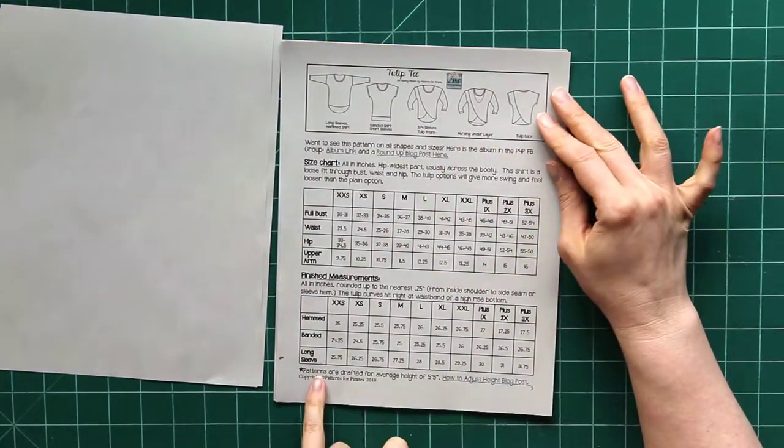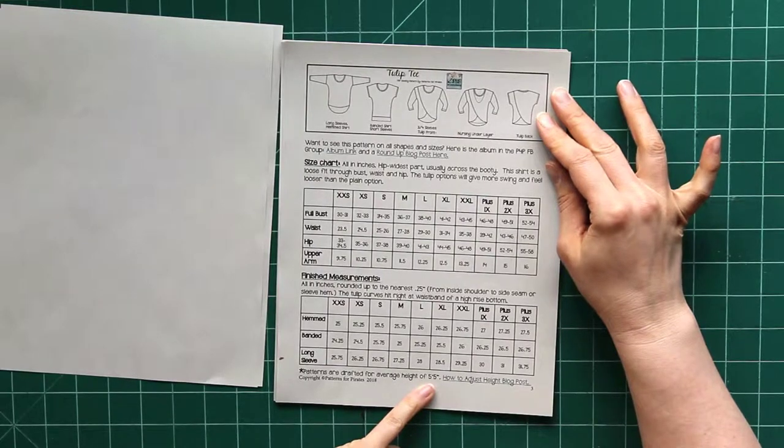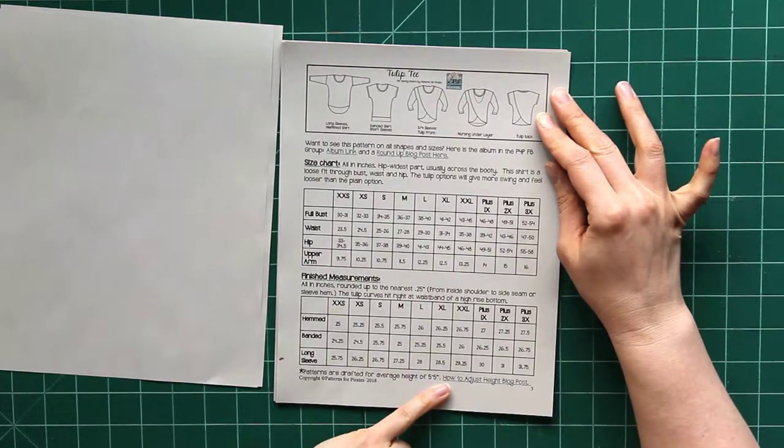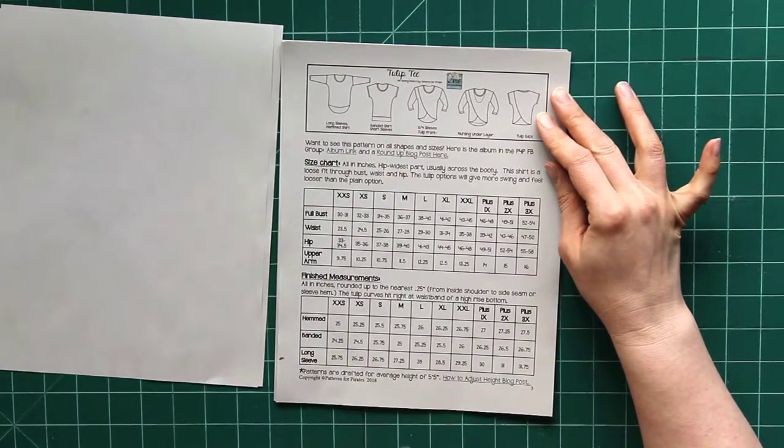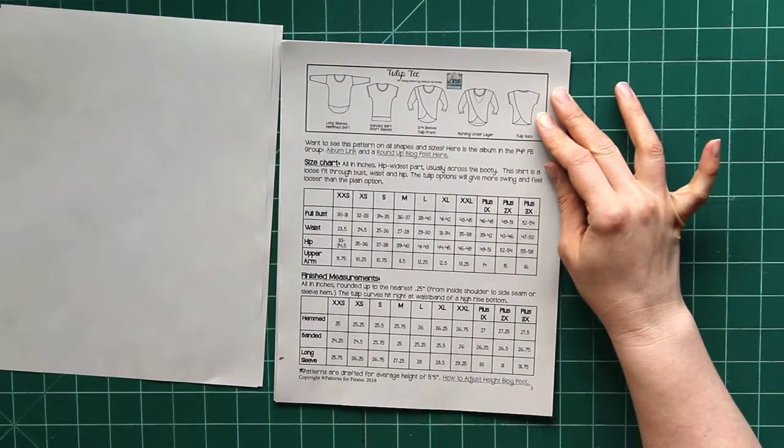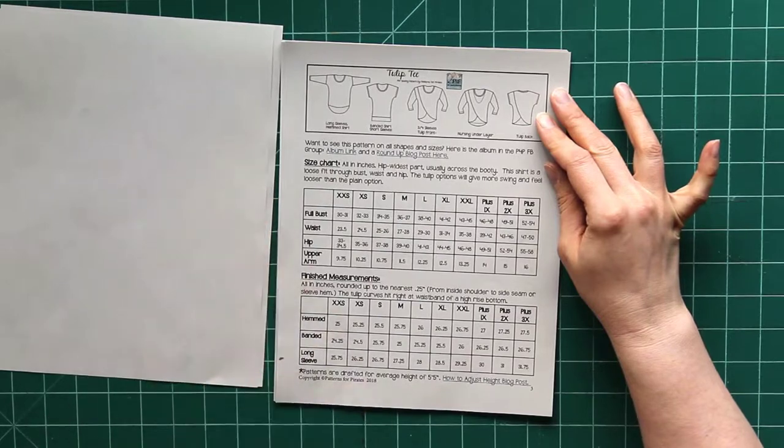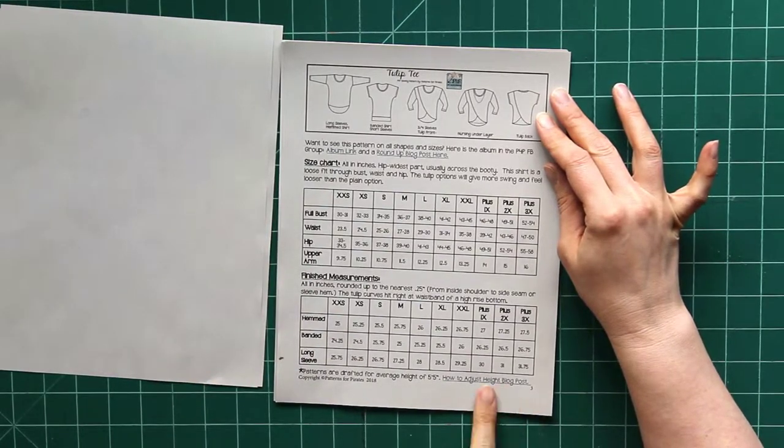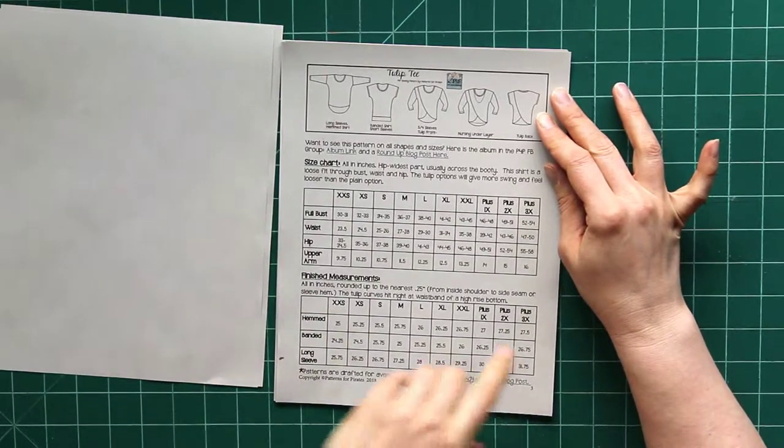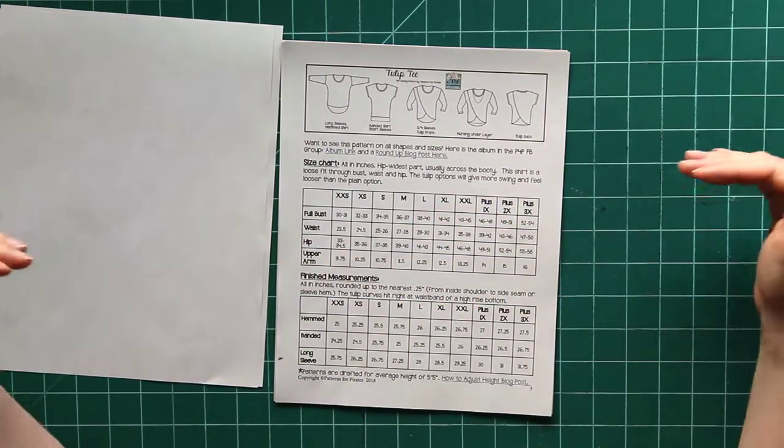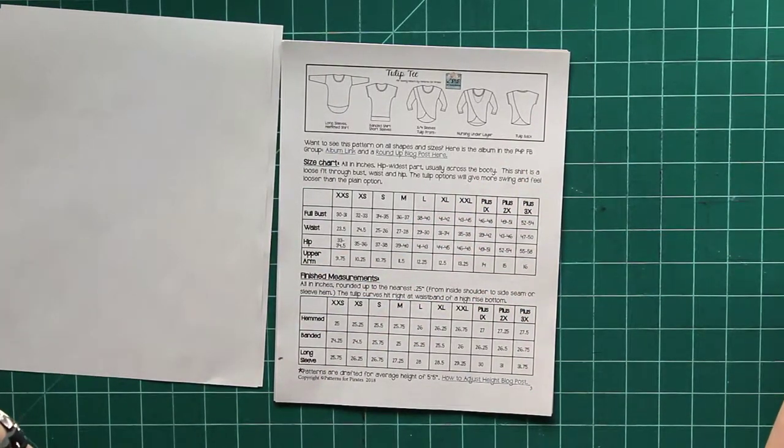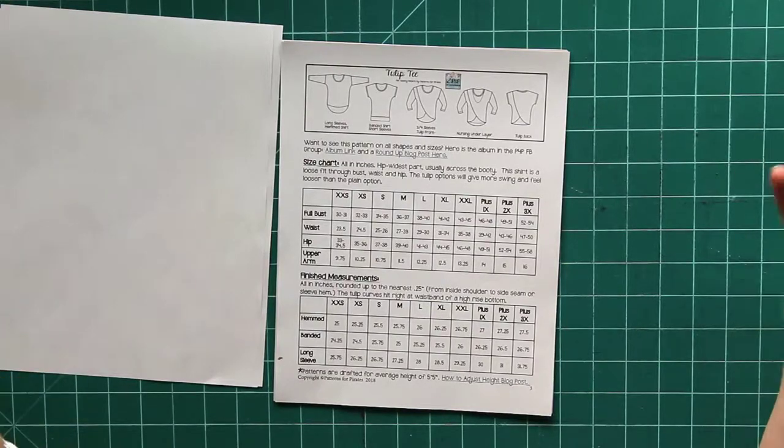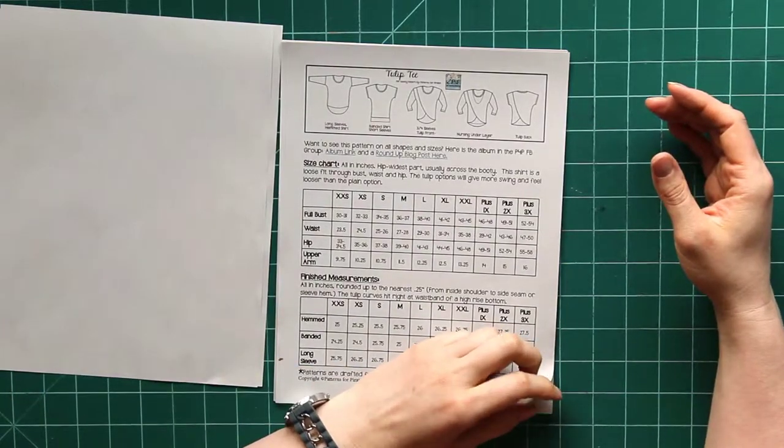Also it says patterns are drafted for an average height of five foot five. So we will be checking out the blog post on how to lengthen this pattern, but it will also show us how to shorten the pattern. So if that's something that you need, we will check into that. I would imagine it's just going to tell us where to make the line for lengthening and shortening. But if you do need a little bit of extra guidance when you're doing that process, then they've given you a resource, which is really nice.